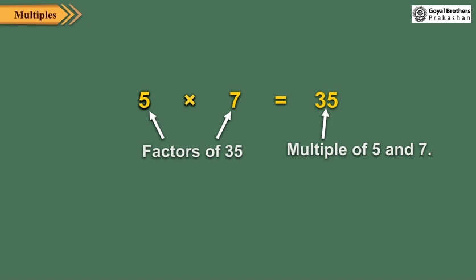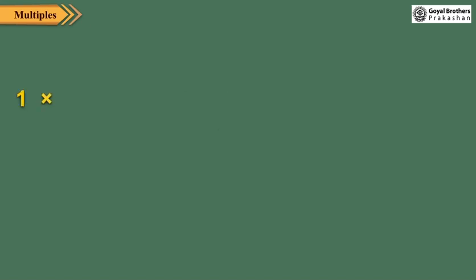Let us now discuss some properties of multiples. Every number is a multiple of 1. For example, 5 is a multiple of 5 because 1 multiplied by 5 is equal to 5, and 14 is a multiple of 1 because 1 multiplied by 14 is equal to 14.